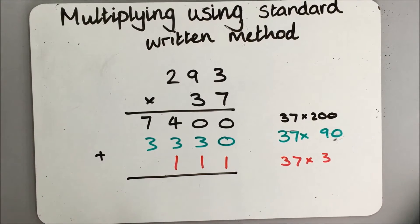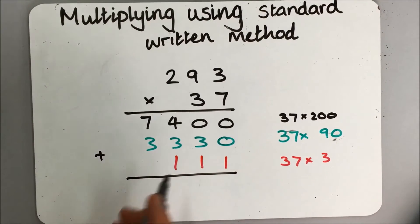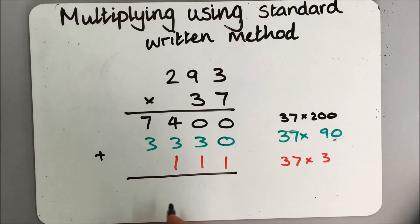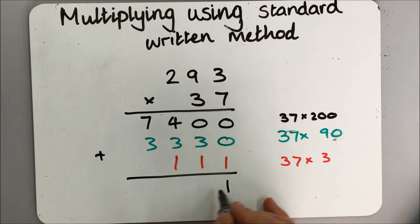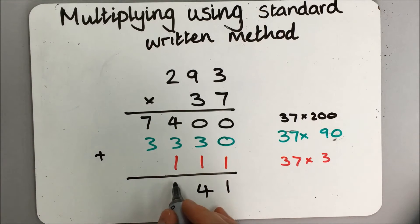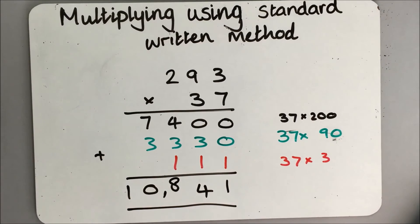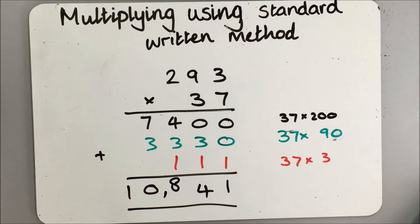This helps to keep everything in order. Place value obviously is maintained. When we come to add it up, it's fairly quick. And again, if there is an error, you can see exactly where the children have made the error within their calculation.